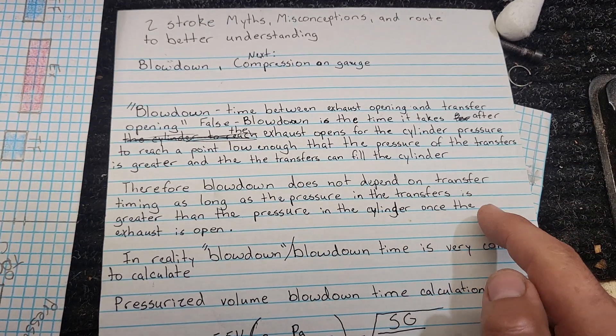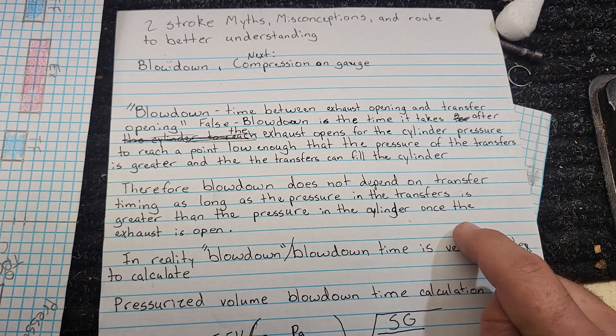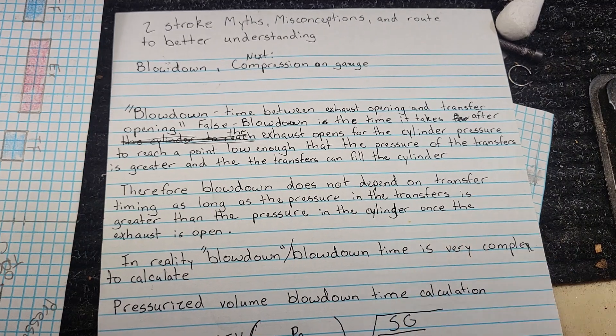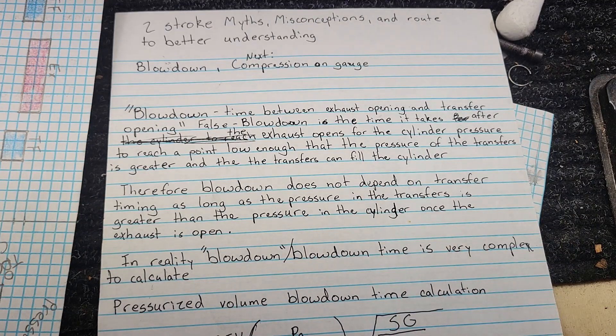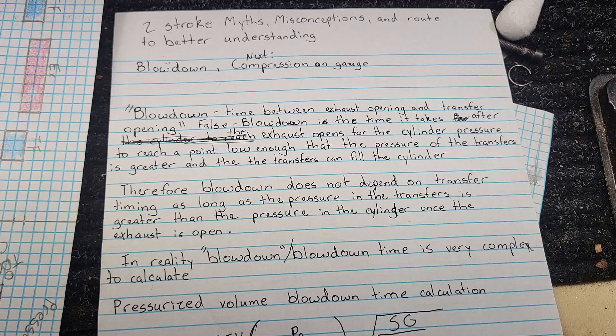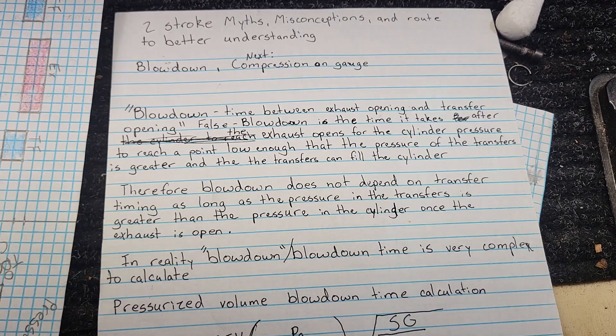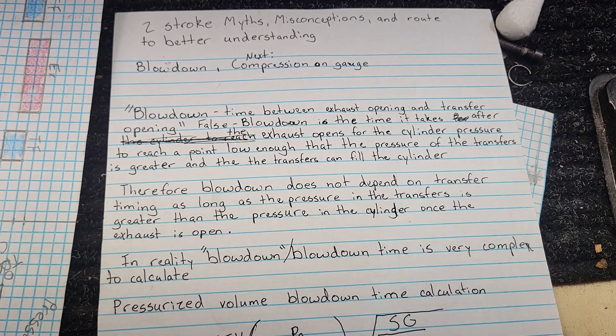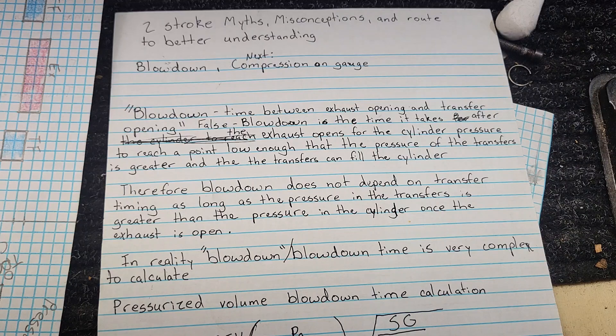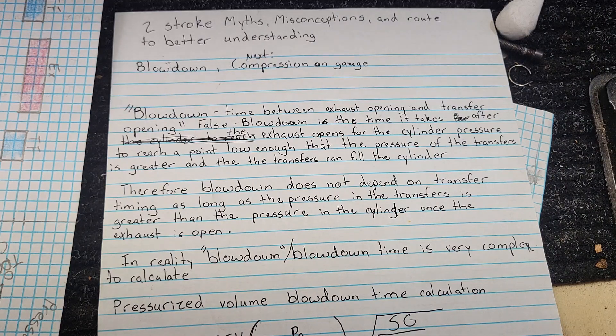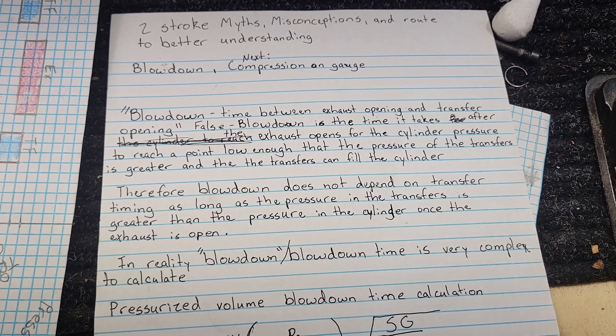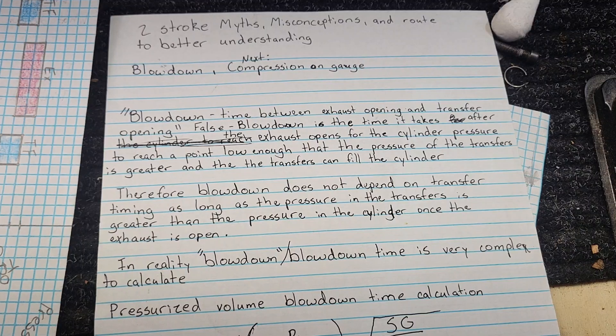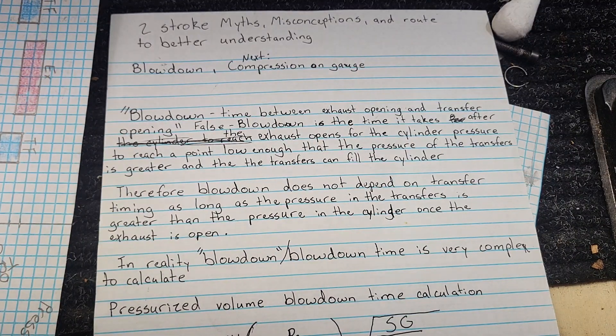Therefore, blowdown does not depend on your transfer timing as long as the pressure in the transfers is greater than the pressure in the cylinder once the exhaust is open, or after the exhaust is open. That's probably going to muddy waters because someone's going to say, oh, well, I like to use 20 degrees of blowdown. Well, that really doesn't matter as long as your pressure in your cylinder has gotten to a point low enough that the pressure in the transfers is greater.